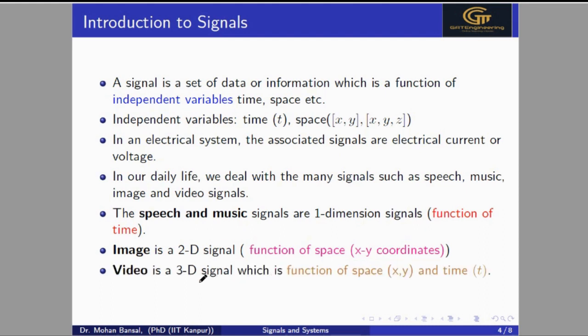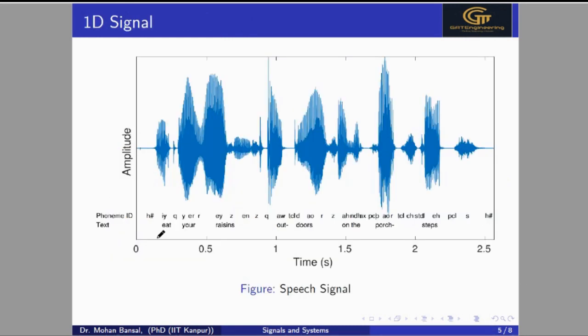On the other hand, video is a three-dimensional signal, which is a function of x, y, and time t. Why is video a three-dimensional signal? Because video is nothing but a series of images — images varying according to time. Images are functions of space coordinates, and the time series representing their change constitutes a video.